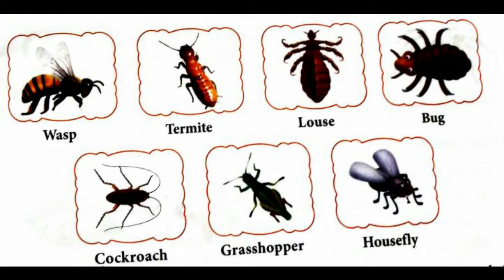Worms are creatures with segmented bodies. They may creep or wriggle. They cannot fly and their bodies are like tubes.